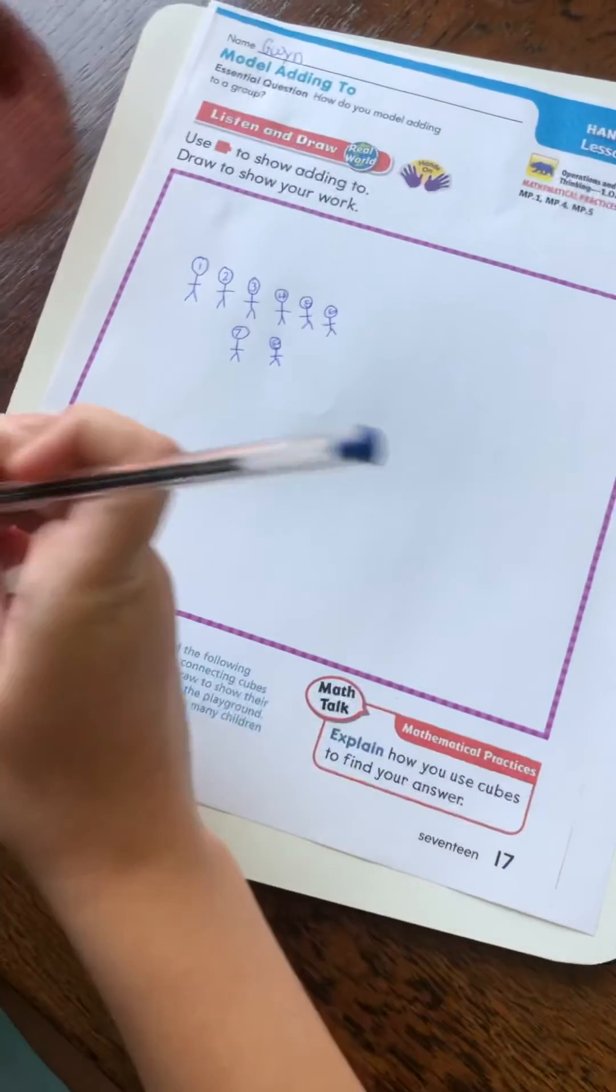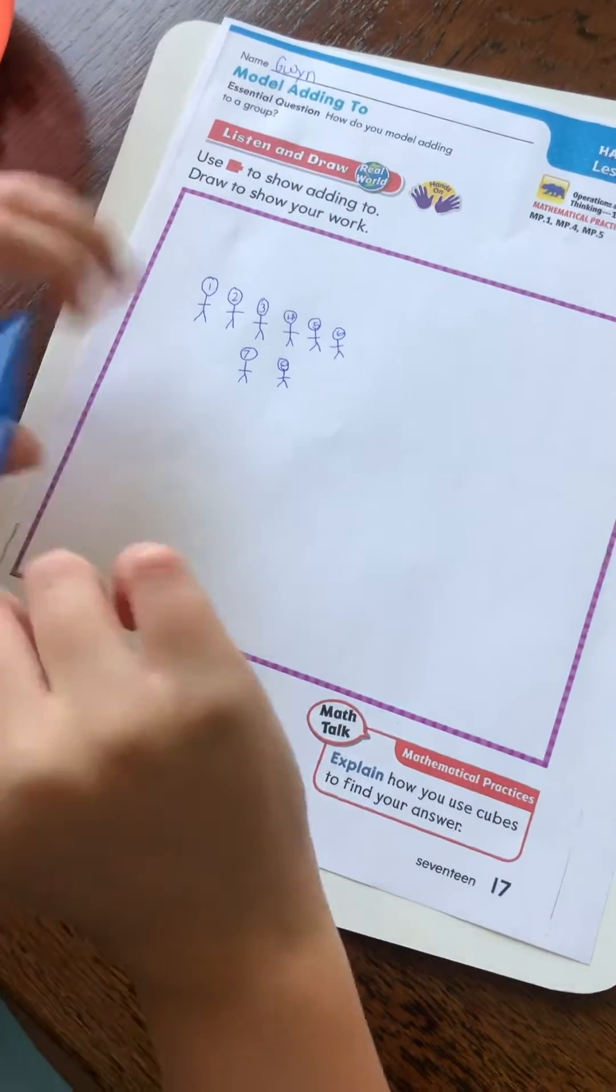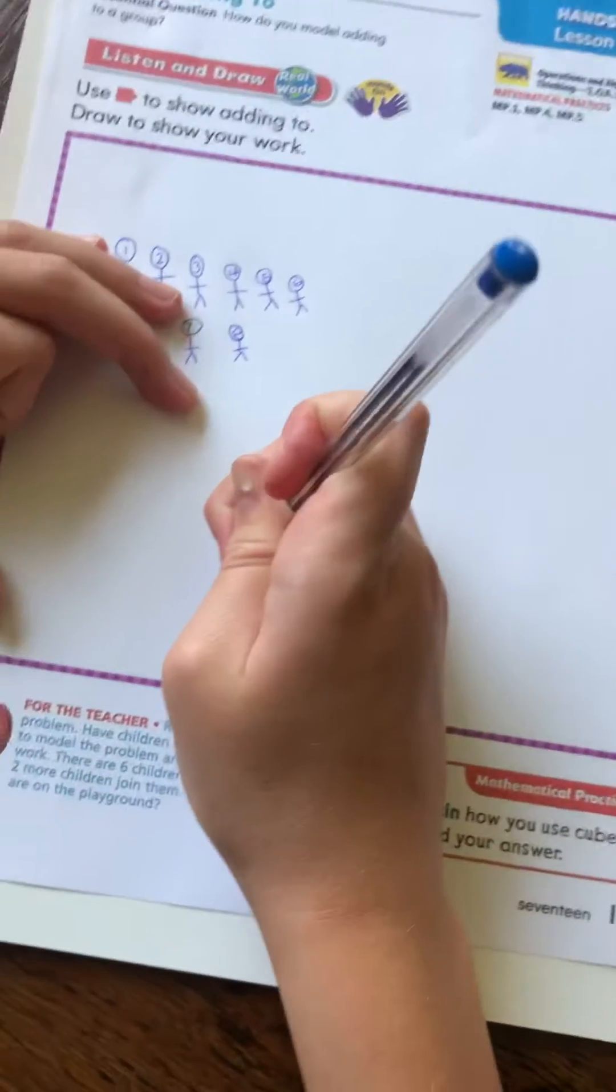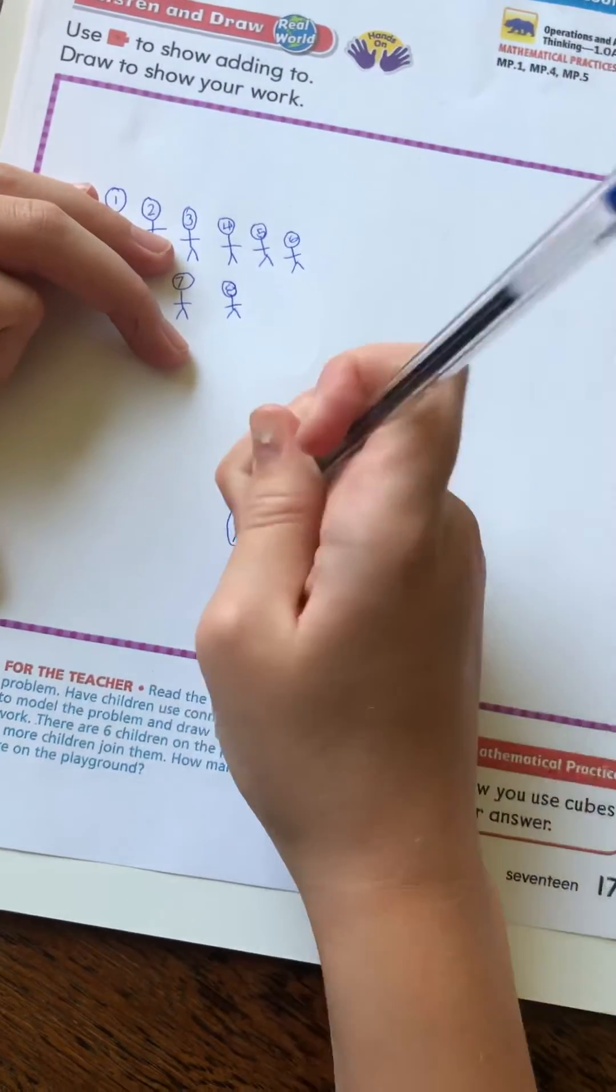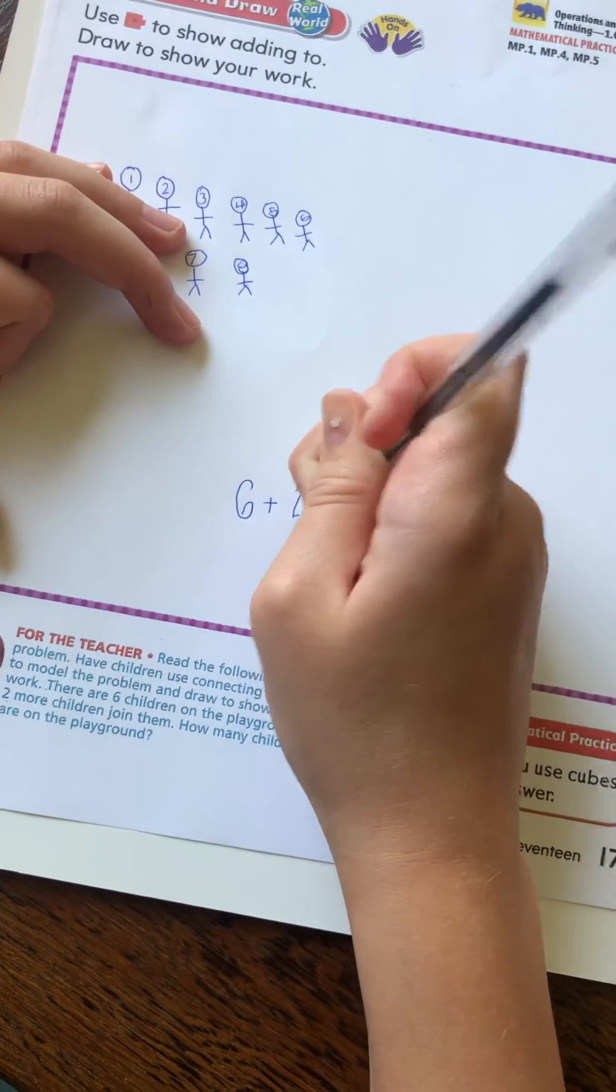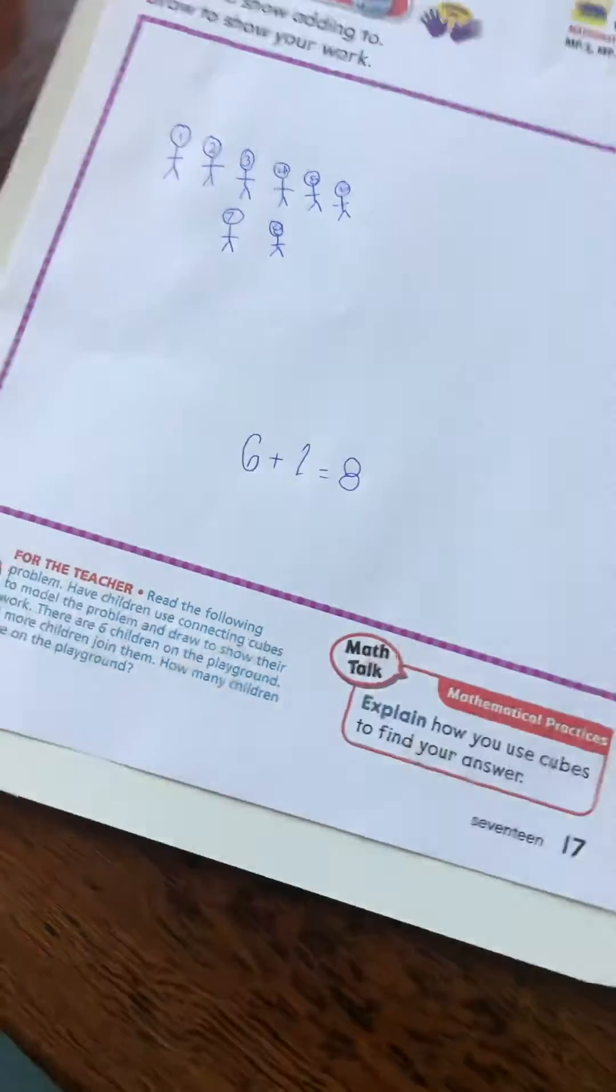And if you're gonna write that number sentence or equation down, what would it look like? It would look like this: six plus two equals eight. Another beautiful math problem done by Gwen. Thank you! You're welcome!